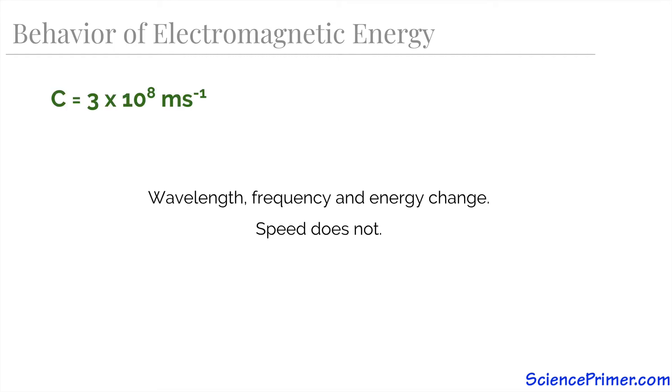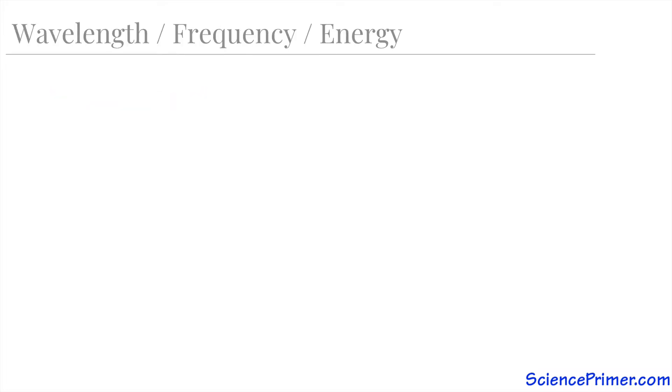The energy, frequency, and wavelength of electromagnetic energy varies across exponential ranges, while its speed never changes. There are some observable characteristics of electromagnetic energy that can be explained due to these patterns.